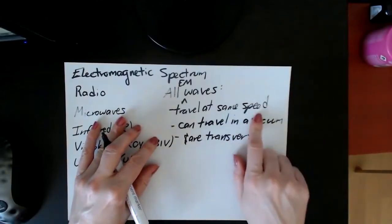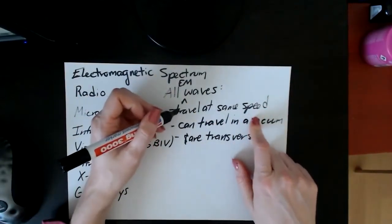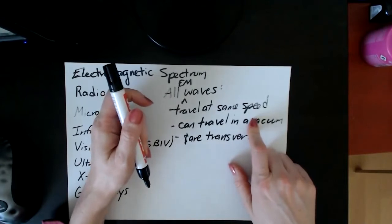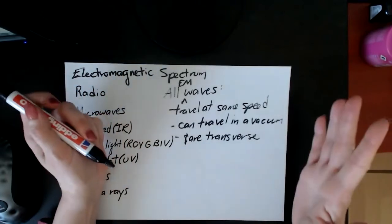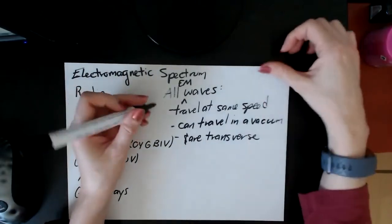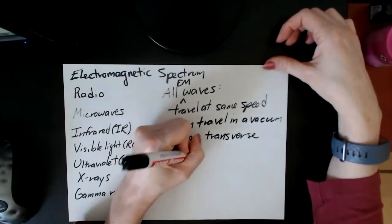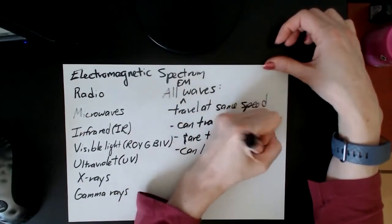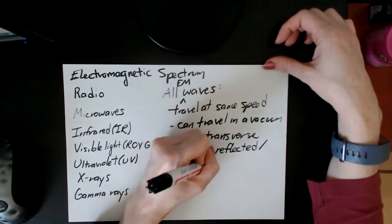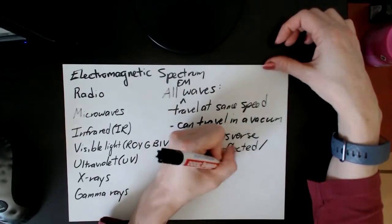And when I say they travel at the same speed, they travel at the speed of light in a vacuum, which is 300 million meters per second. You do not need to know that value. If you do, that's fine, but just so you know, you do not need to know that value. And like I said, they can be reflected and refracted.